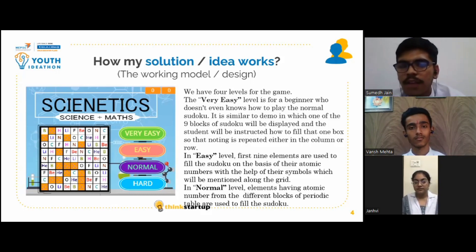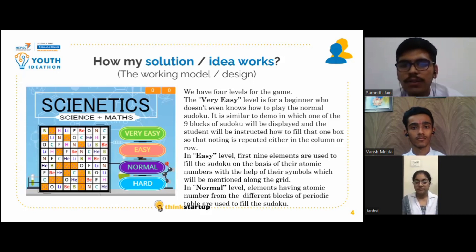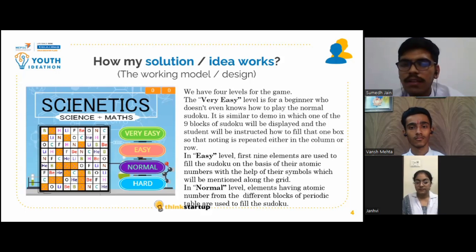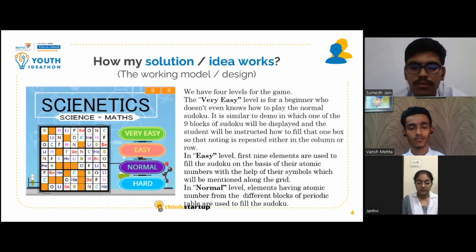In the easy level, we have the first 9 elements which are used to fill the Sudoku on the basis of their atomic numbers, with the help of symbols which will be mentioned along the grid. In the normal level, elements having atomic numbers from different groups of the periodic table are used to fill the Sudoku.